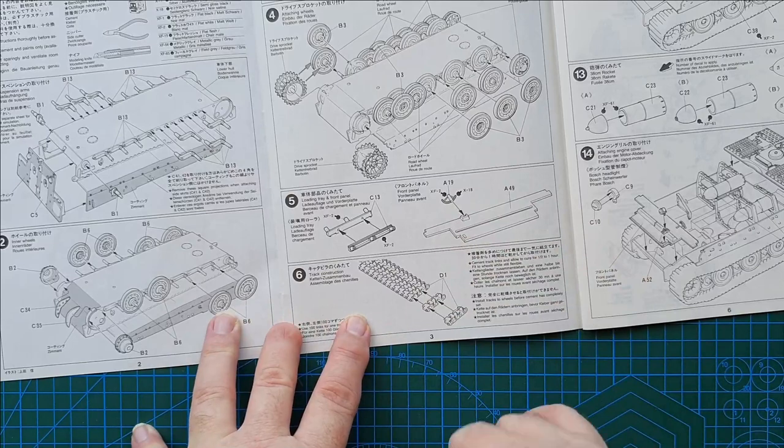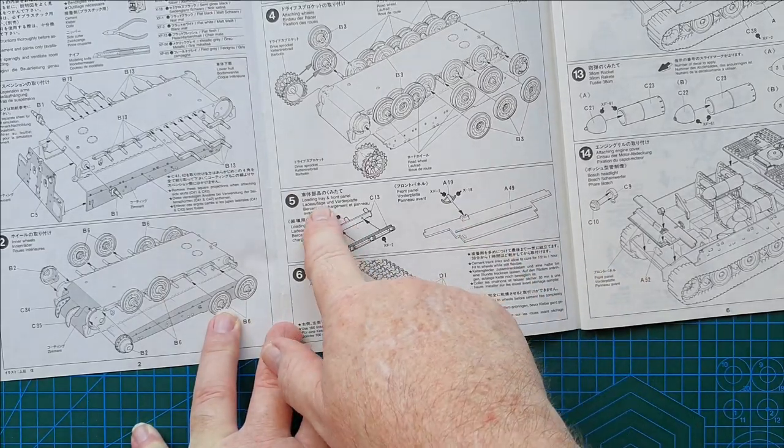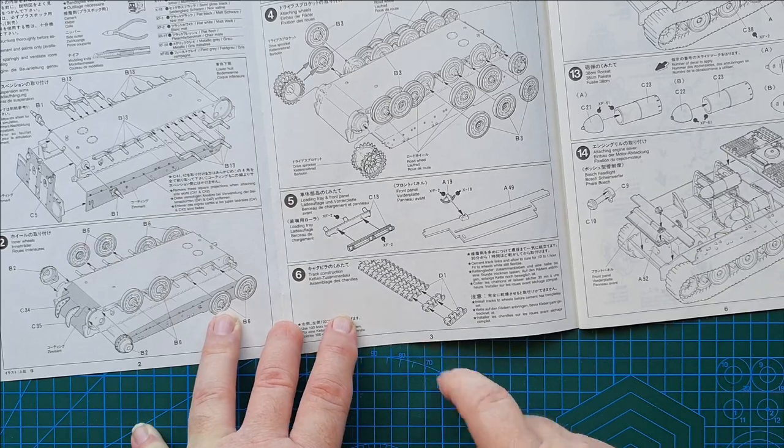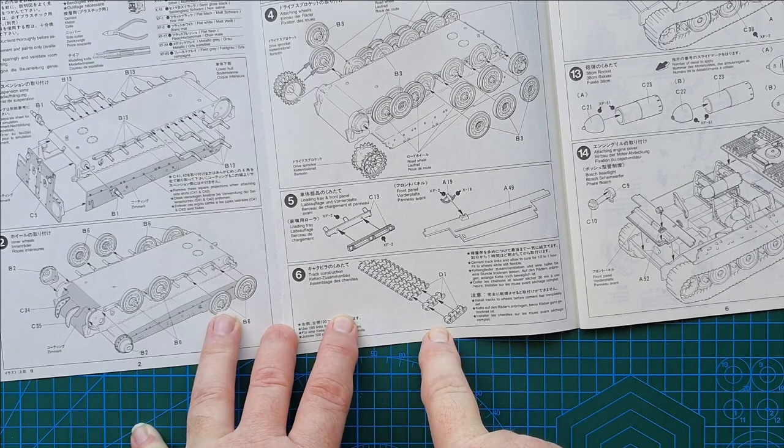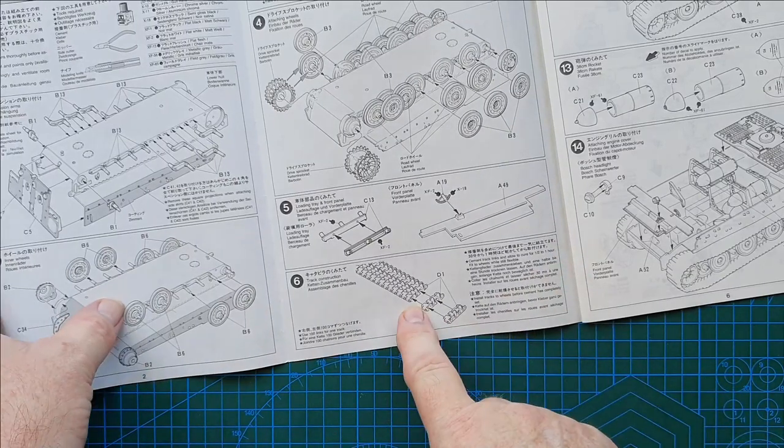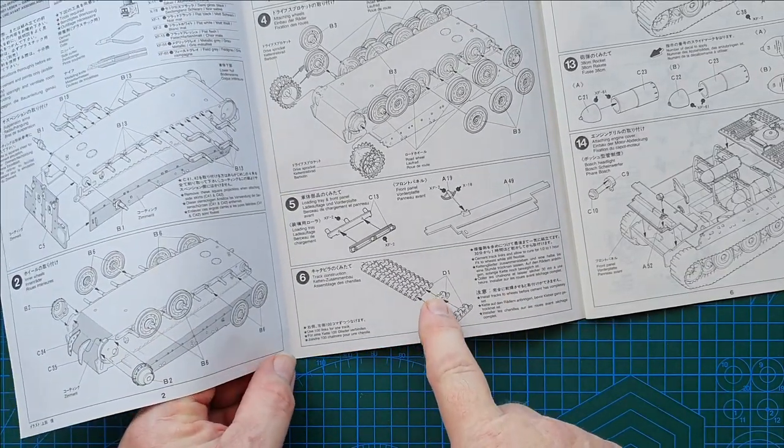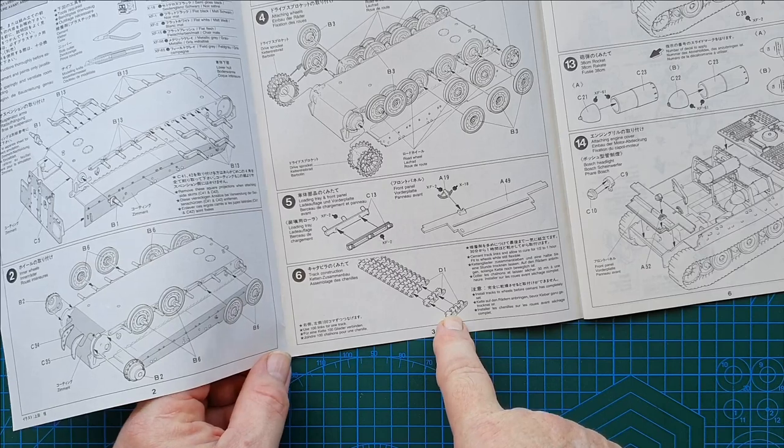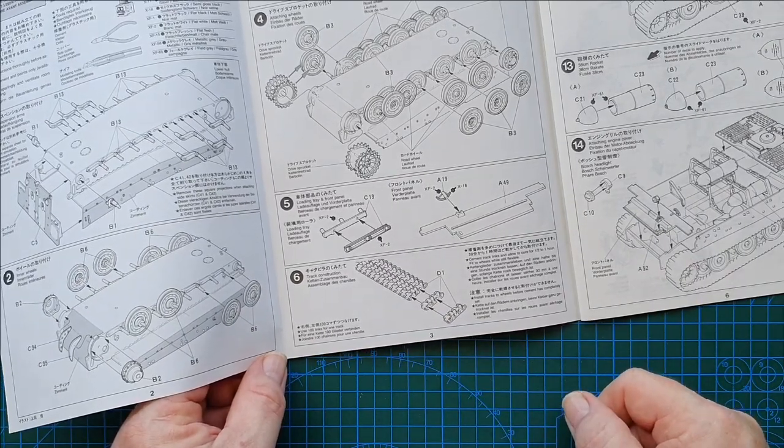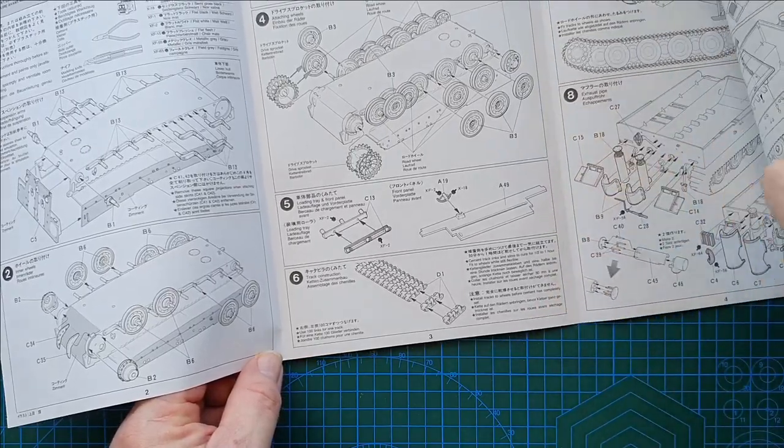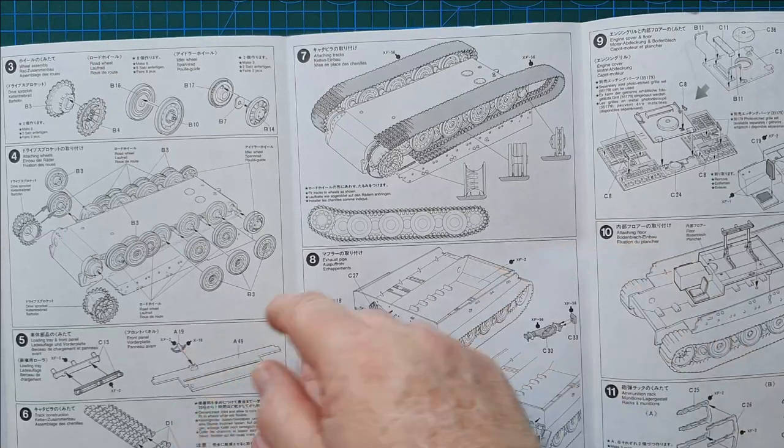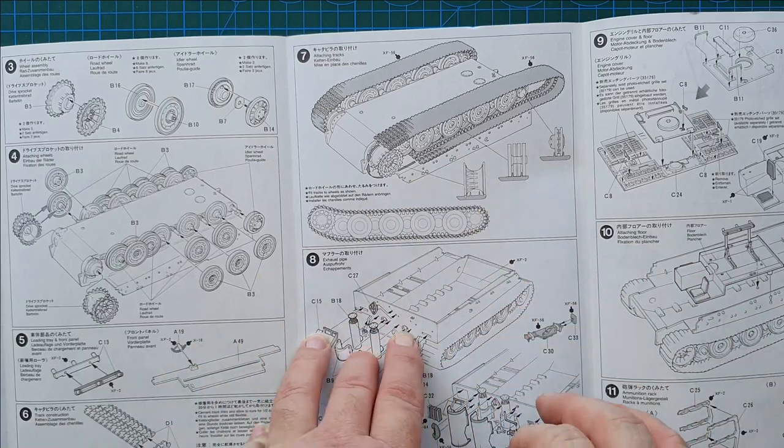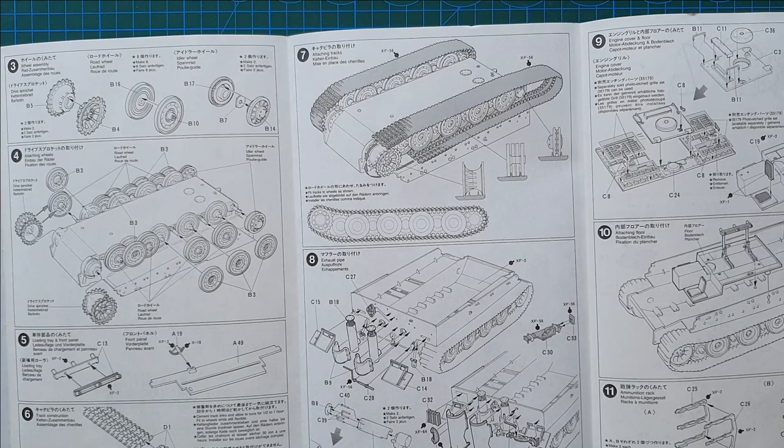This is the front panel. The good thing about Tamiya is it does tell you what these things are - this is the loading tray for the shells. Then you put the individual track links together. I believe you'll have to glue these tracks together unfortunately, so that's a bit of a bummer. It does explain how the tracks go and how they sit on the wheels. Read the instructions carefully before you glue any of the tracks together. Take your time.